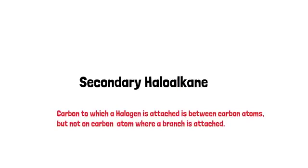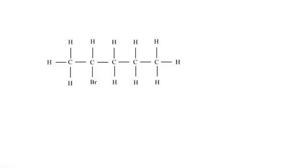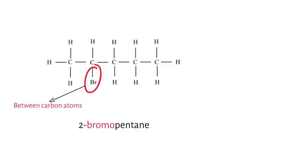Now let's look at secondary haloalkanes. How do we spot this type? Firstly, the halogen is never on the first carbon. Secondly, it's never on a carbon atom where a branch is attached — if it is, it's no longer a secondary haloalkane. It can be anywhere except the first carbon or a carbon where a branch is attached. For example, Br is on carbon number two, not the first carbon, and the structure has five carbon atoms, so the IUPAC name is 2-bromopentane.